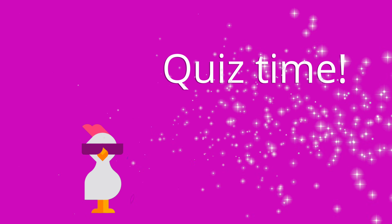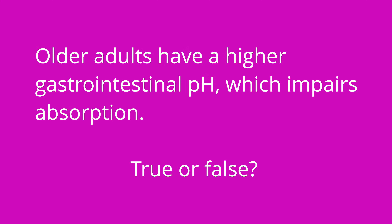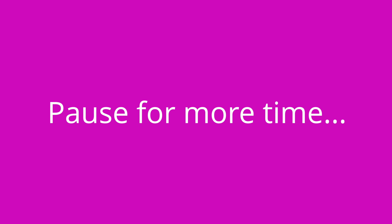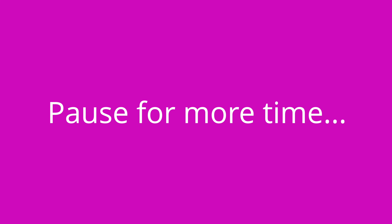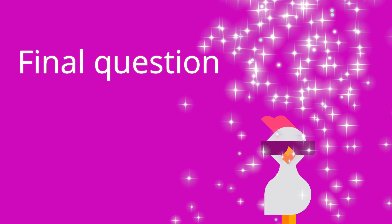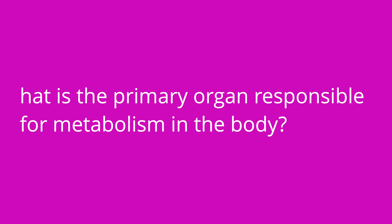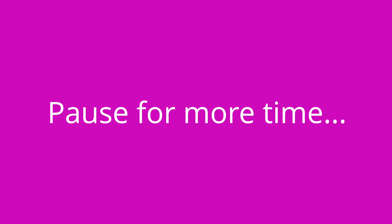Quiz time — I have three questions for you. First, true or false: older adults have a higher gastrointestinal pH, which impairs absorption. The answer is true. Second question: how a medication gets from the bloodstream to the site of action describes what phase of pharmacokinetics? If you said distribution, you are correct. Third question: what is the primary organ responsible for metabolism in the body? The answer is the liver.